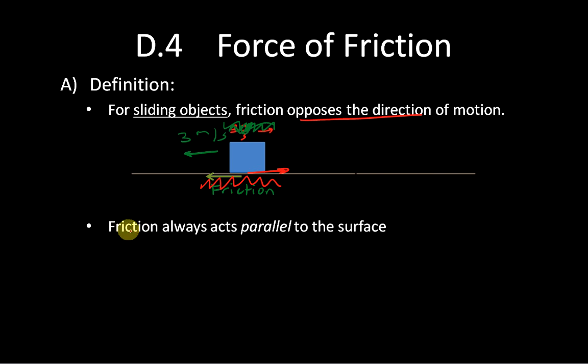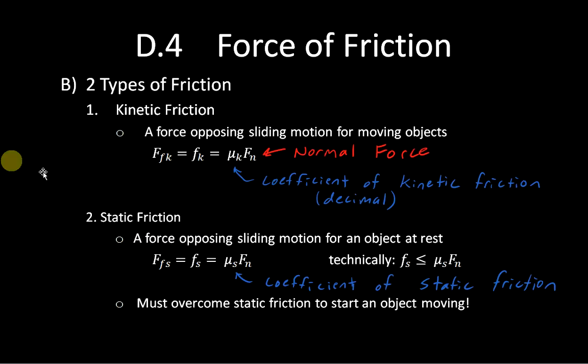That vector of friction is always acting parallel to the surface. So my surface here is a flat horizontal line, so friction would always be a parallel force, and you think of it as between those two things: the object, the blue box in this case, and the ground.